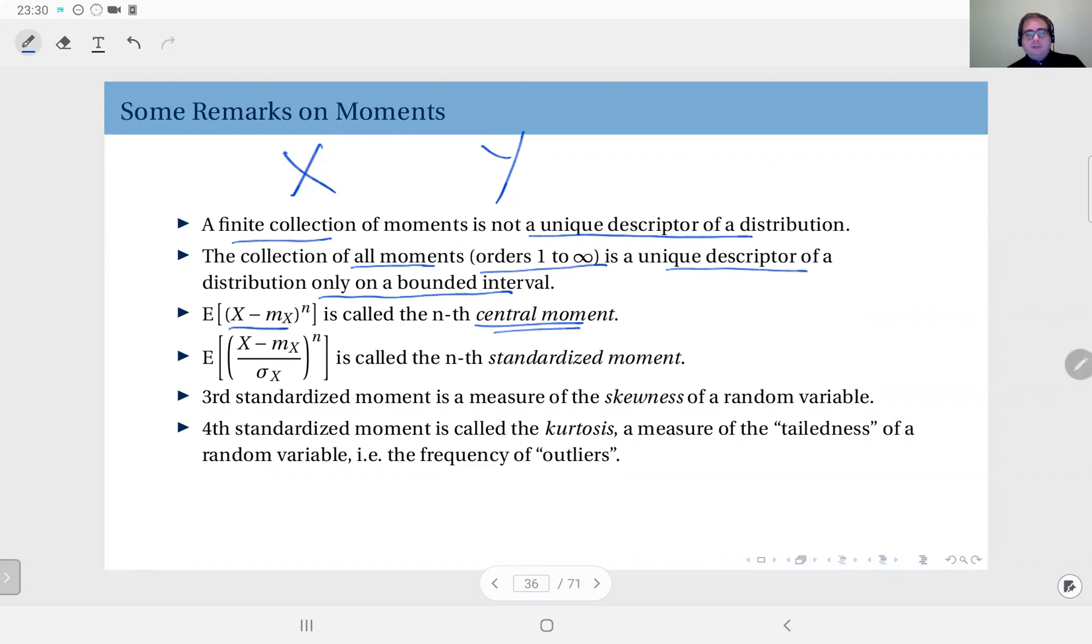So what we do is we shift the distribution by its mean, so we make it a zero mean distribution. We just shift the origin of the real line to wherever the mean is, so when we do the shift, the distribution is centered at zero.